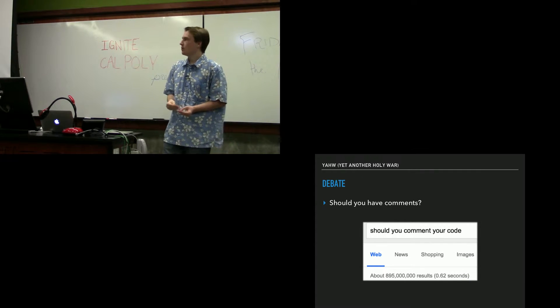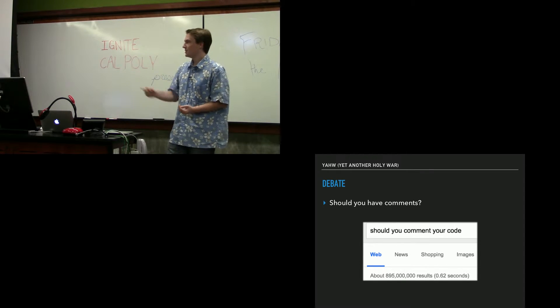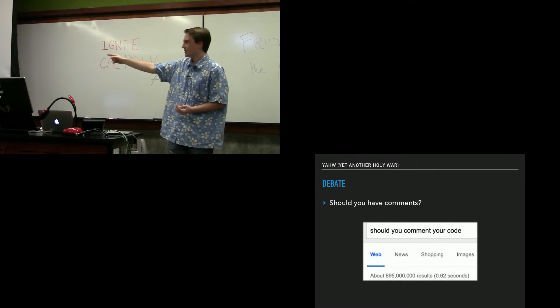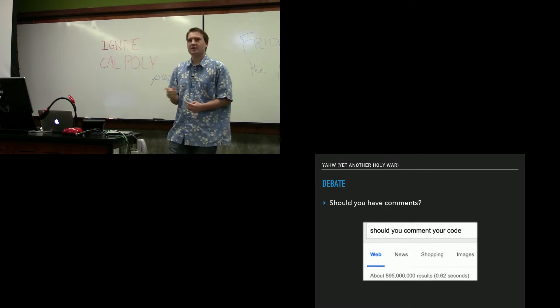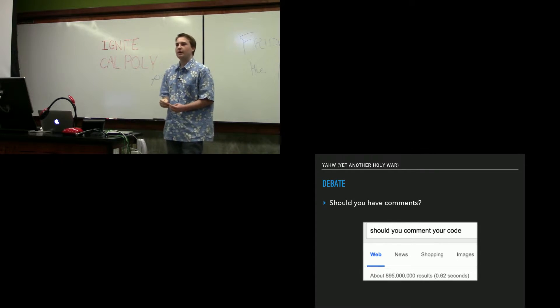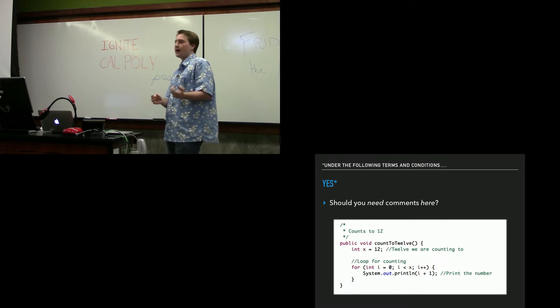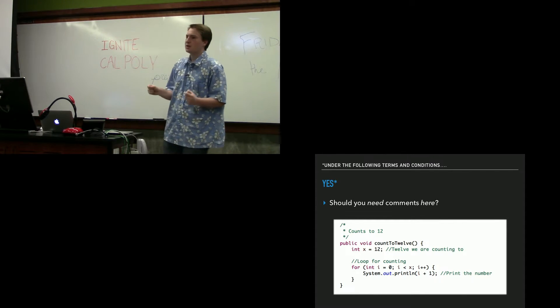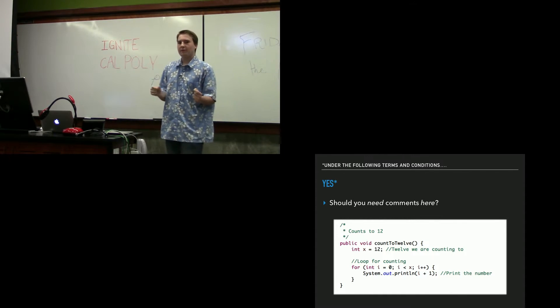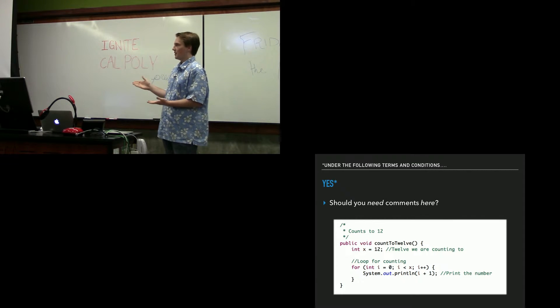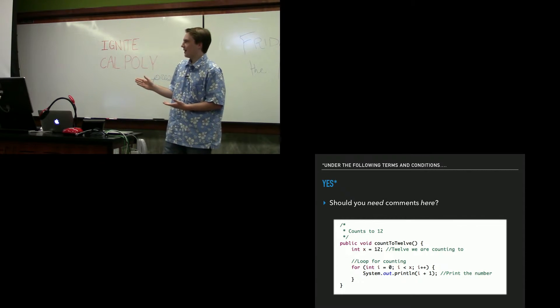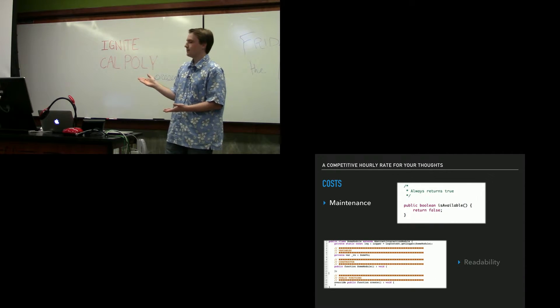Today there's been a debate though. Should you have comments? A lot of people say yes, please comment your code, but Google disagrees. There's almost a billion results on why or why not you should have comments in your code. And the ultimate answer I found after searching and summing it down for you is yes, kind of. You need to consider, do you need comments right here? So a lot of people are fans of putting comments like this that describe what they're doing a little too literally. I make a variable that is 12 and I say hey, here's 12, and then I describe the loop, and then I describe the printing, which is a bit unnecessary.